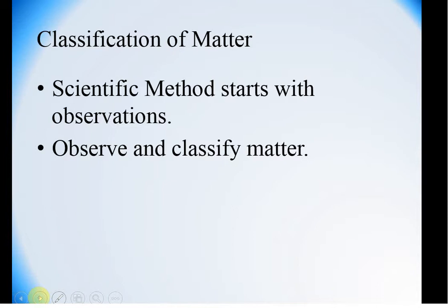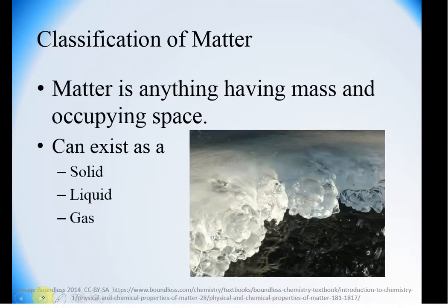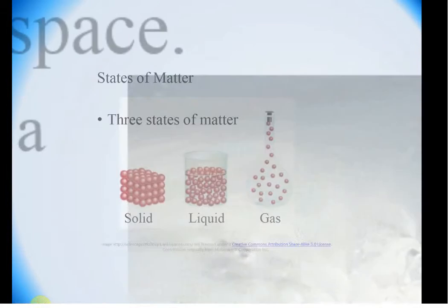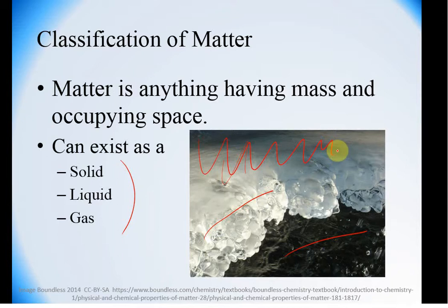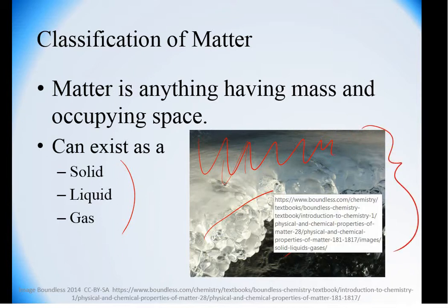So, the scientific method starts with observations. One of those observations could be about matter. And so we can use those observations to really try and classify the matter that we are seeing. Remember, matter is anything that has mass and occupies space, and is going to exist as either a solid, liquid, or a gas. In fact, in this image here, we have solid ice on top of liquid water, and then the atmosphere has the gaseous water vapor as well. And so here we have all three states existing together.